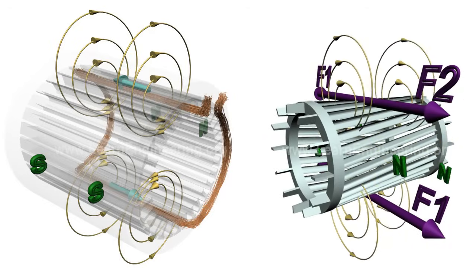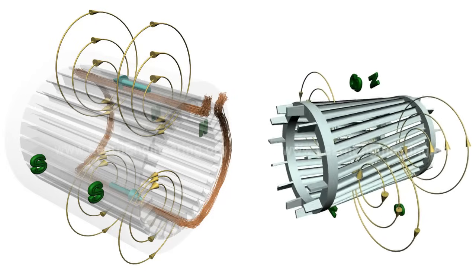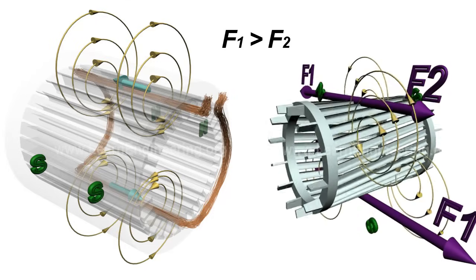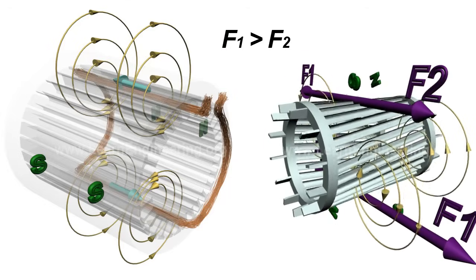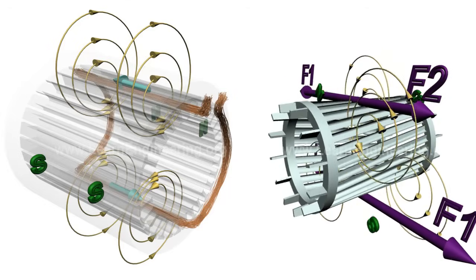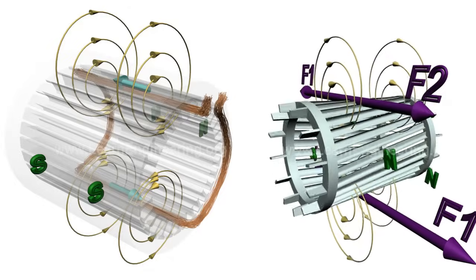But if we can somehow give this rotor an initial rotation, one torque will be greater than other. There will be a net torque in same direction of initial rotation. As a result the rotor will keep on rotating in the same direction.